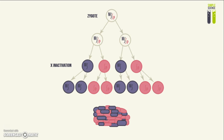The X chromosome that has been inactivated will be called a Barr body. So you end up with one active X chromosome, like normal, and a Barr body, although it's not shown here.